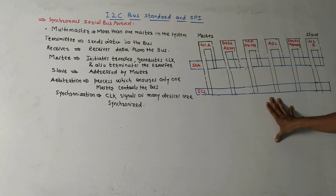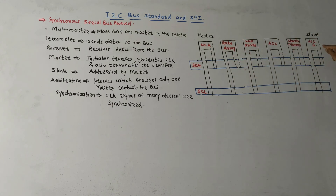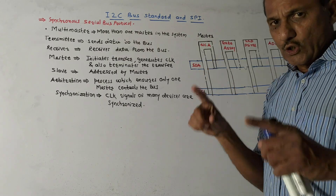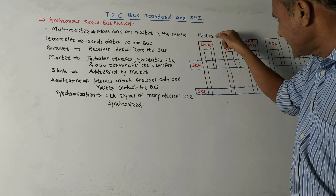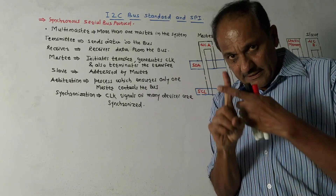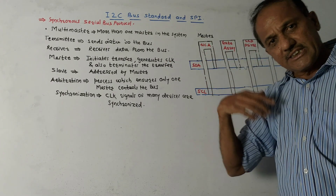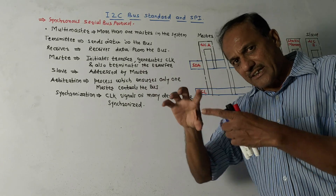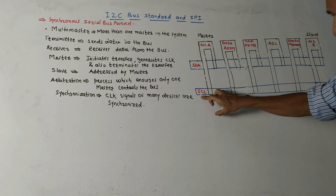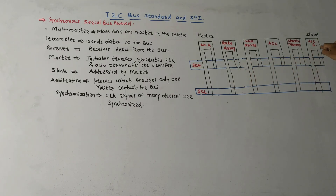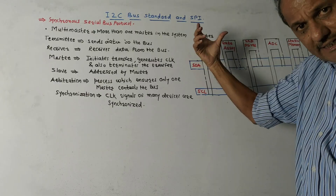Let us look at this diagram as an example to explain the concept of I2C bus. We are considering two microcontrollers, microcontroller A and microcontroller B. If we want to transmit data from microcontroller A to microcontroller B, and microcontroller A is the master, then the master microcontroller will address the slave microcontroller, generate the clock signal, and start transmitting data. Data will be transferred using the two bus lines — SDA and SCL — and received by microcontroller B.